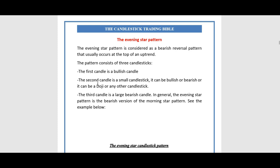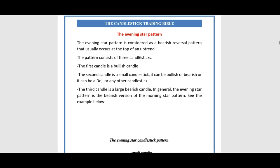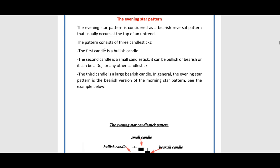The evening star pattern — as you probably guessed — is the opposite of the morning star. The evening star is considered a bearish reversal pattern that usually occurs at the top of an uptrend. The pattern consists of three candlesticks just like the morning star. The first candlestick is bullish — not bearish — and the second candle is a small candlestick.